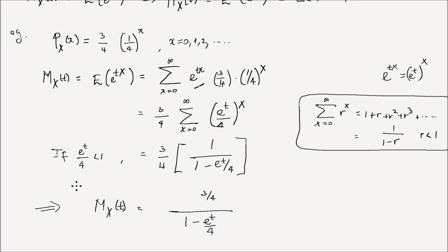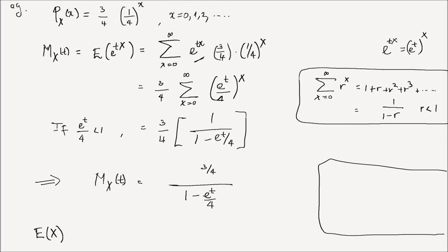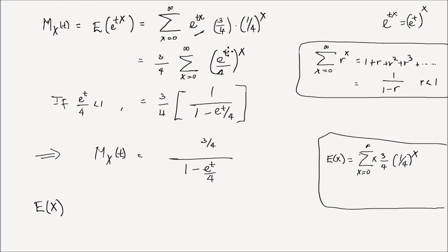By definition, the MGF is valid if the expectation of e to the tx exists in an open neighborhood around 0. What is the expected value of x given the MGF? One approach would be to compute the summation from 0 to infinity of x times (3/4)(1/4)^x directly, but this turns out to be much more difficult. Using the MGF method, I just need to find the derivative of the MGF with respect to t and then plug in 0 for t.